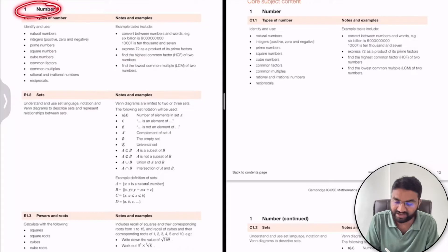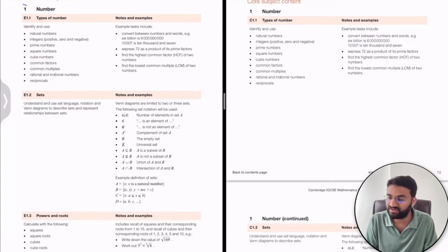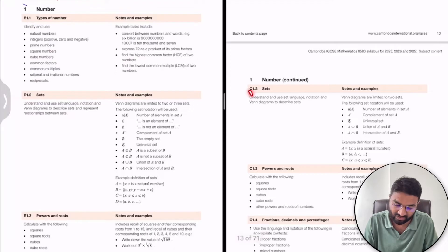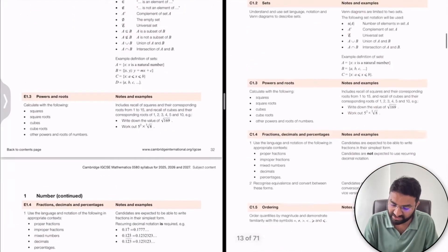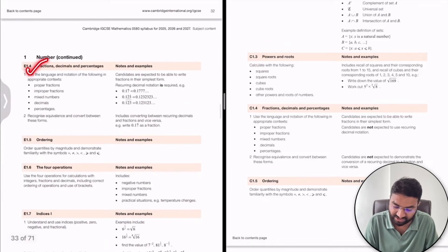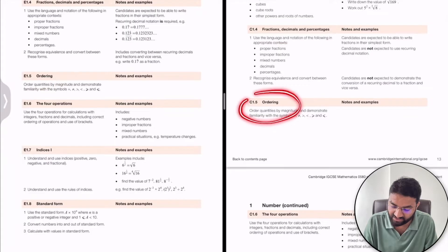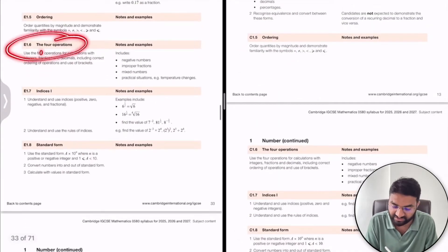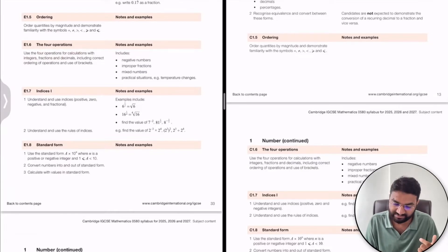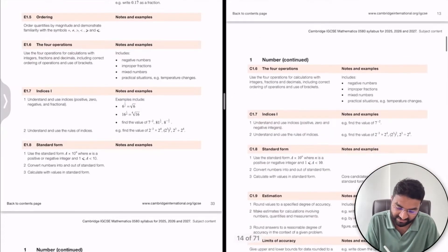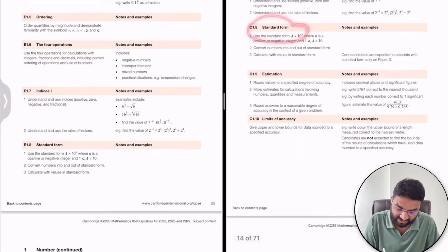Starting with the first topic — Number. This includes types of numbers: natural numbers, whole numbers, prime numbers, common factors, LCM and LCF. Sets are covered for both core and extended. Then powers and roots, fractions, decimals, and percentages are the same across both. Ordering is present for core students, then the four operations — addition, subtraction, multiplication, division of integers — reciprocal numbers, improper fractions, proper fractions, and mixed fractions. Then indices, and standard form in the format a × 10^n where a is between 1 and 10.